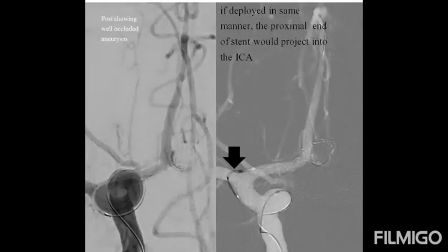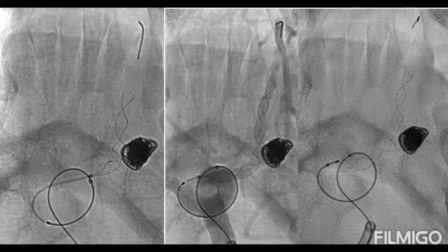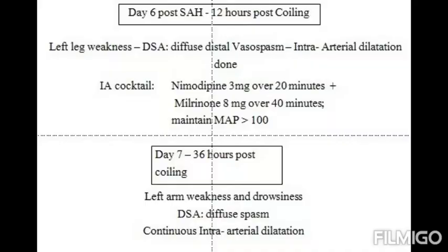Following coil occlusion of the aneurysm sac, stent deployment was continued in the A1 ACA. However, if deployment was continued in the same fashion, we noted that the stent would project into the terminal ICA, which is not a good configuration to achieve. Therefore, the entire stent was resheathed and redeployed from a distal position in the A2 ACA. This way, we were able to achieve complete stent deployment within the A1 ACA.